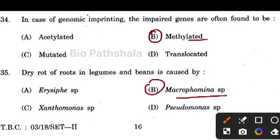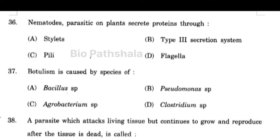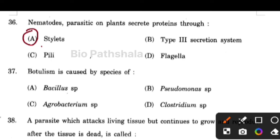Next question: nematodes parasitic on plants secrete proteins through the stylets — option number A. Another question: botulism is caused by species of Clostridium.